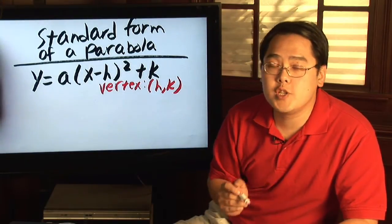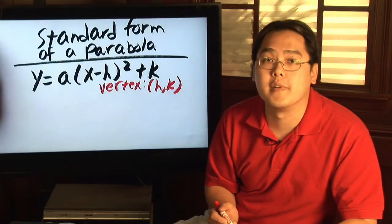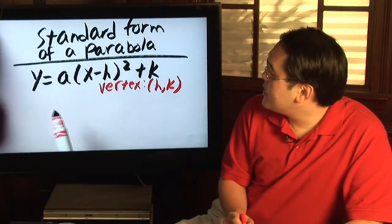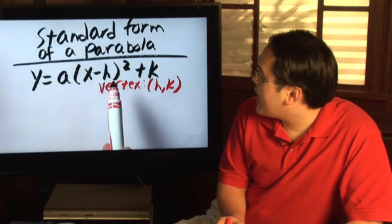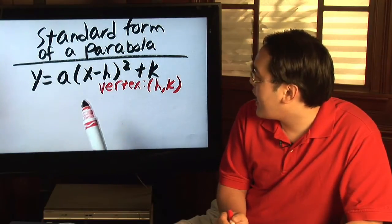Now, first and foremost, you do need to be familiar once again with the standard form of a parabola. And this is what's called the standard form: y equals a times x minus h squared plus k.